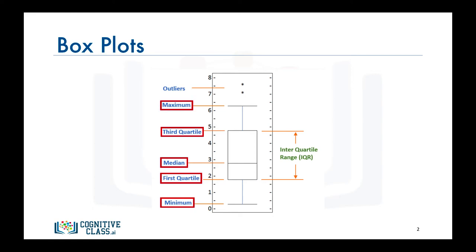And the final dimension is maximum, which is the highest number in the sorted data. Now let's see how we can create a box plot with matplotlib.